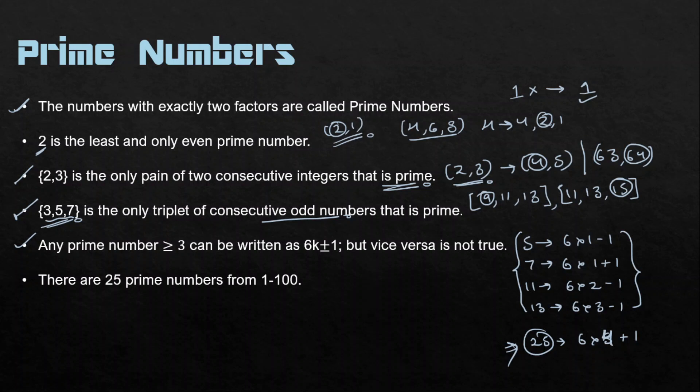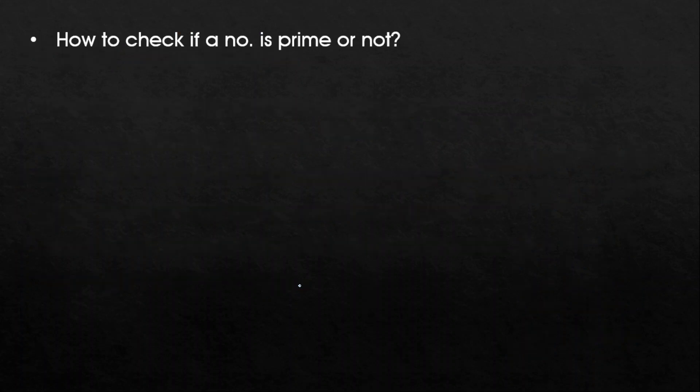There are 25 prime numbers from 1 to 100. As a challenge, let me know in the comments how many prime numbers exist from 101 to 200.